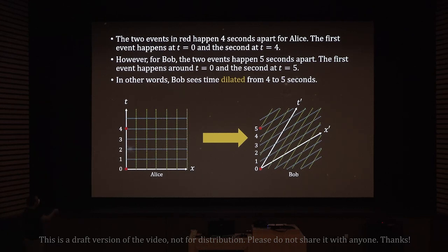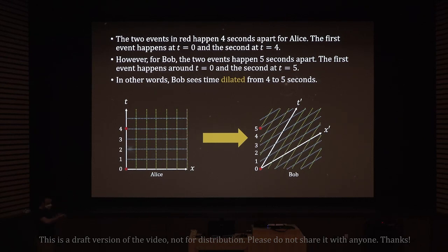I'm going to prove that this is indeed the case. I have two events in red that happen four seconds apart for Alice. The first event happens at t equals zero and the second at t equals four. Alice starts her stopwatch at the first light, and after four seconds on her stopwatch, she sees the second light turn on.